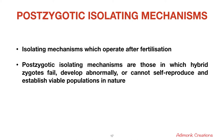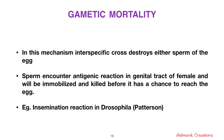Post-zygotic isolating mechanisms operate after fertilization. Unlike pre-zygotic mechanisms where no fertilization occurs, here the zygote does form. Post-zygotic isolating mechanisms are those in which hybrid zygotes fail to develop normally or cannot self-reproduce to establish viable populations. The first is gametic mortality: in interspecific crosses, either the sperm or egg is destroyed, or sperm encounters an antigenic reaction in the female's genital tract and is immobilized and killed before reaching the egg. An example is the insemination reaction in Drosophila.